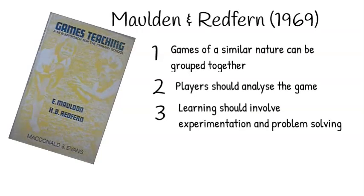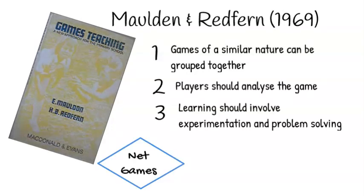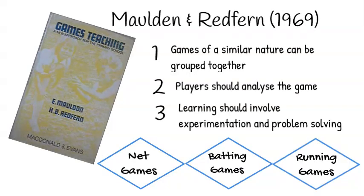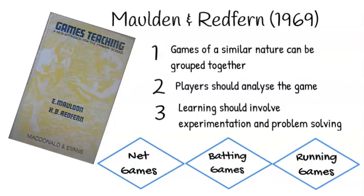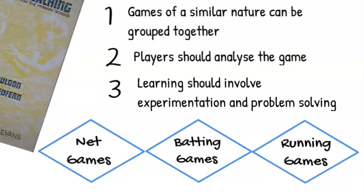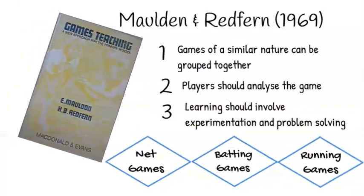This proposal suggested grouping games into three categories: net games, batting games, and running games. The purpose of the game classification was to assist the process of game analysis and the development of game appreciation. It would also assist teaching for skill and knowledge transfer between games. The idea that games could be grouped together into different categories is another feature of the TGFU model and the game-centered approach. Over time there have been different game categories suggested by different people.